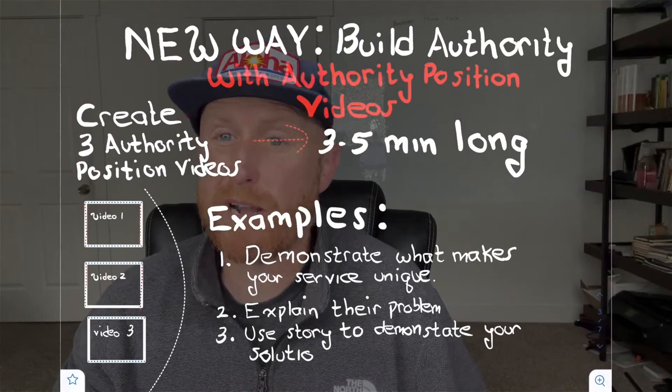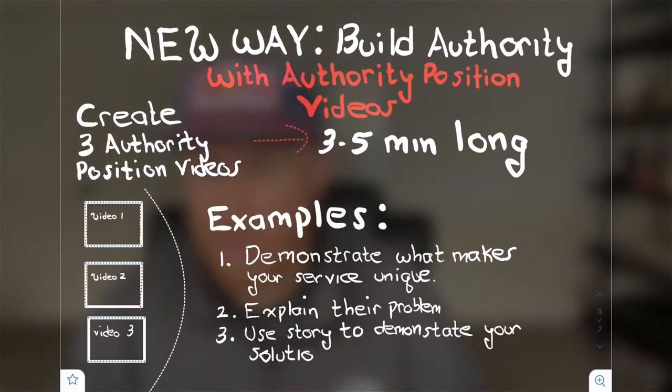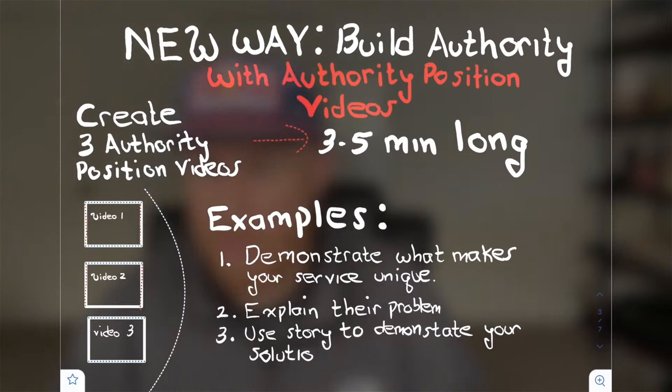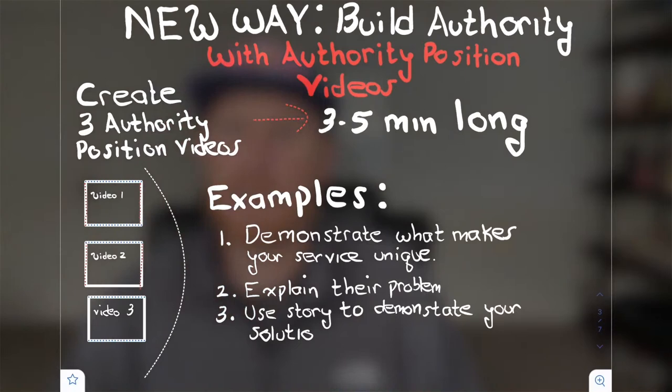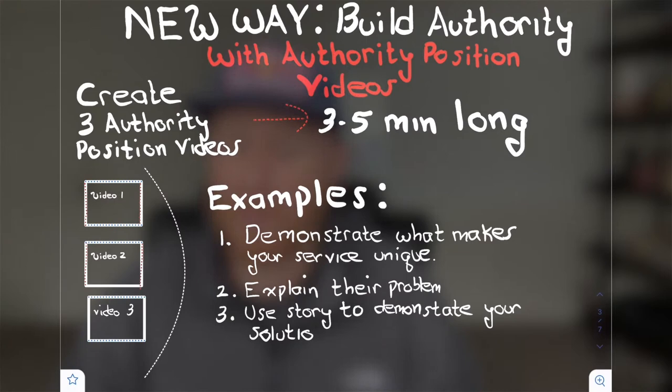So this is the new way — the way that we do it. We do this with authority positioning videos. We're going to have you create three videos that establish authority in your marketplace. These videos should be three to five minutes long, and they should demonstrate what makes your service unique, explain the customer's problem, and use story to demonstrate the value your business provides. This is often best done with a testimonial video where you sit down with a patient or customer and have them describe their experience of working with you.